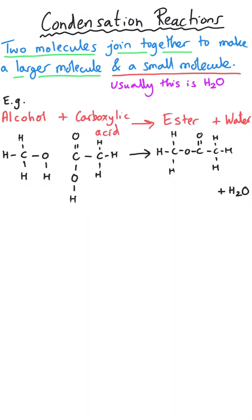So the example that I've drawn here shows an alcohol reacting with a carboxylic acid to make something called an ester and water. These molecules react together because the O-H group from the carboxylic acid and the H from the alcohol form a new bond between them, and that's where the water comes from because you can see here that we've got H2O.